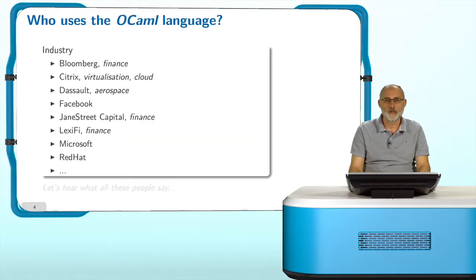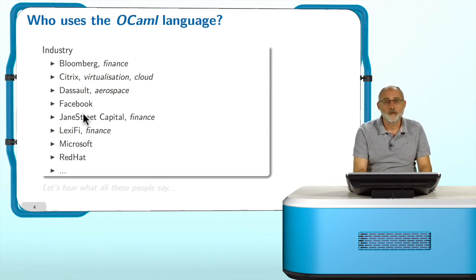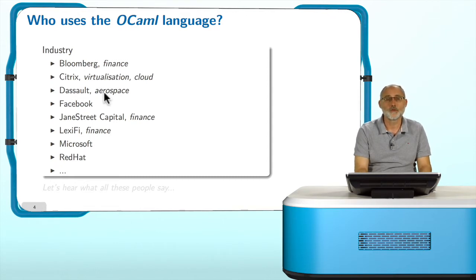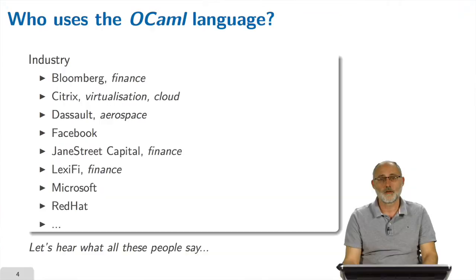And then you have industry using OCaml for advanced and sophisticated applications. Of course, you will find finance applications: Bloomberg, Jane Street, LexiFi. But you have aerospace systems like Dassault Aviation using this. Then you have virtualization and cloud: Citrix, operating system tools, Microsoft, Red Hat, and various others.